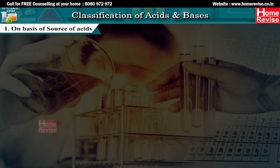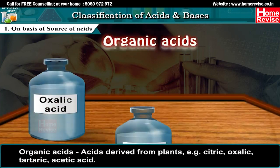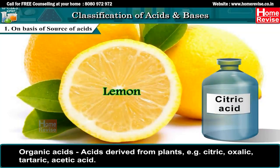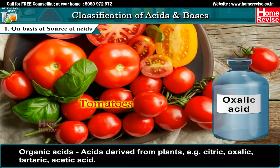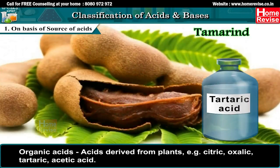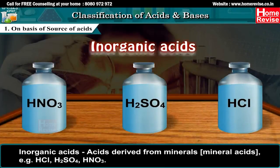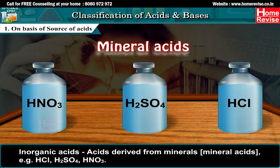Classification of acids and bases. 1. On the basis of source of acids: Organic acids — acids derived from plants, e.g., citric, oxalic, tartaric, and acetic acid. Inorganic acids — acids derived from minerals (mineral acids), e.g., HCl, H2SO4, HNO3.